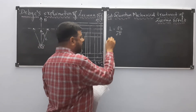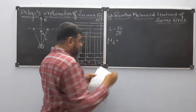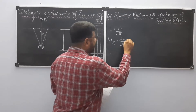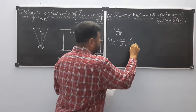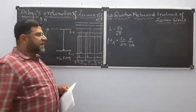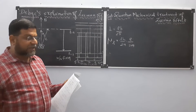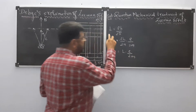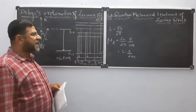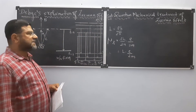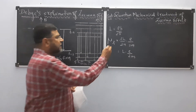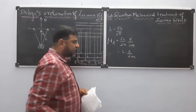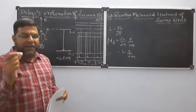The orbital angular momentum of the electron due to spin is given by that expression. The magnetic moment is given as μL = (Lh/2π) × (e/2m), where e is the charge of the electron and m is the mass. This simplifies to μL = L × (e/2m).